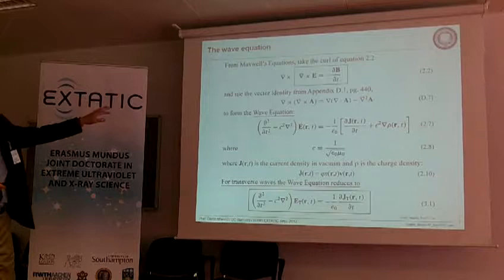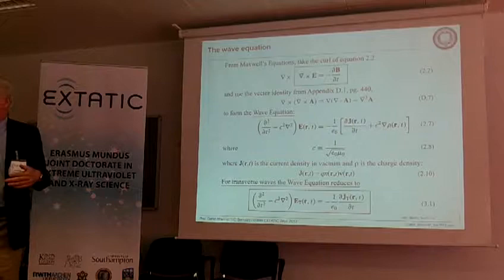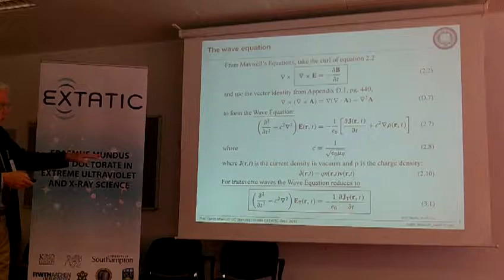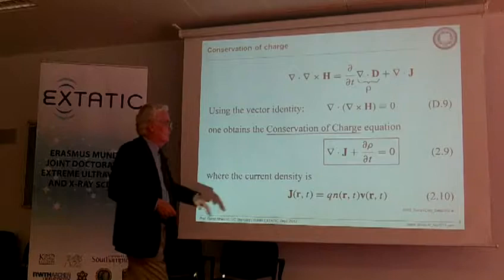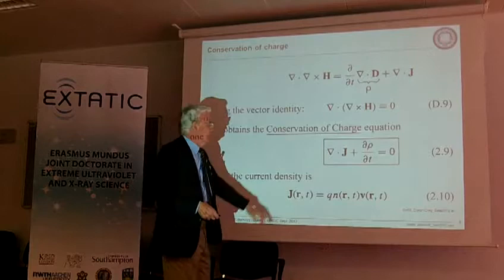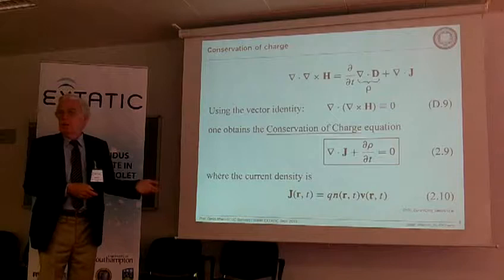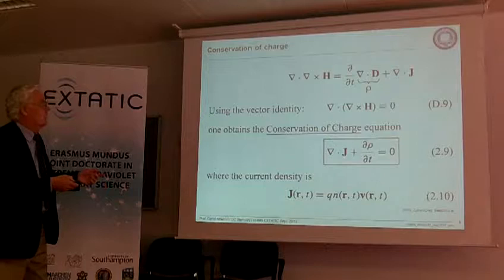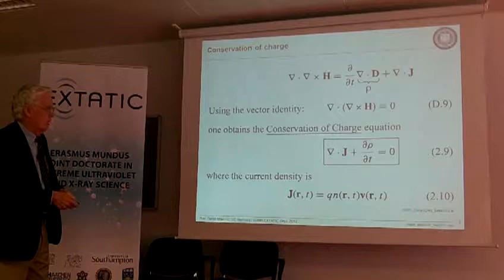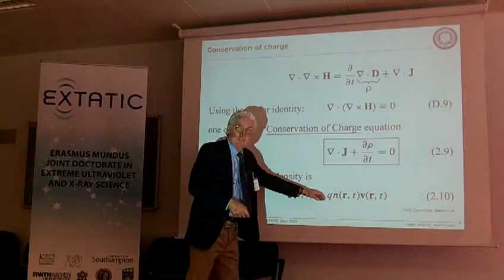There are a few other things to develop — the Poynting vector and other things. Another result is the continuity equation, which looks like conservation of charge or a continuity equation in fluid mechanics. This is a relationship we want to use, where the current density J is written as NQV.